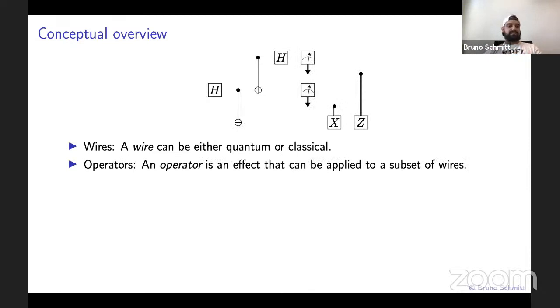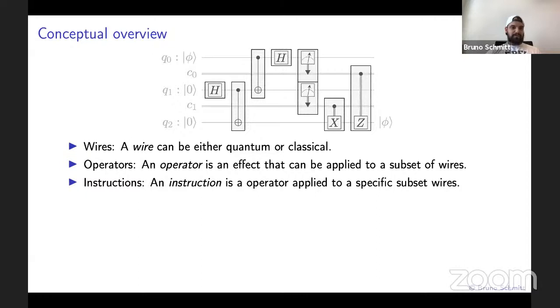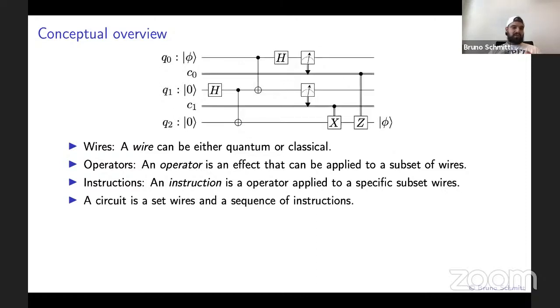Next, we have operators. An operator is a fact that you can apply to a subset of wires. Quite often this fact is a unitary evolution. In this circuit, we have the Hadamard operator, the X and Z operators, a CNOT operator which you can see as a control X operator, and the measurement operator. Note that the execution of the X and Z operators depends on the state of some classical bit.